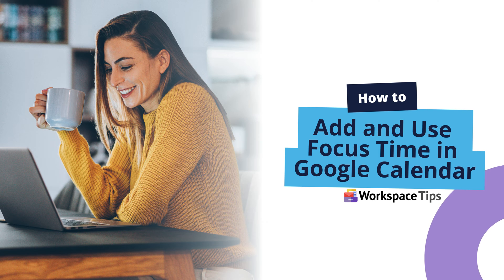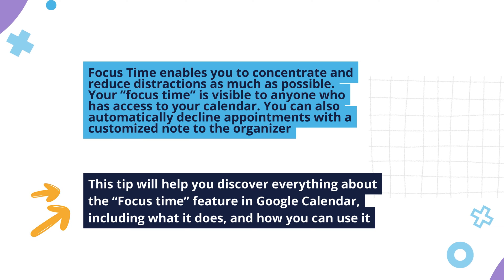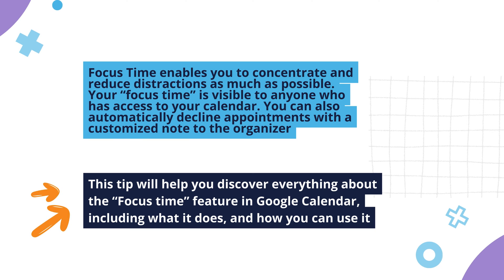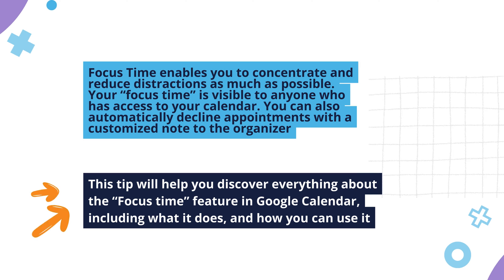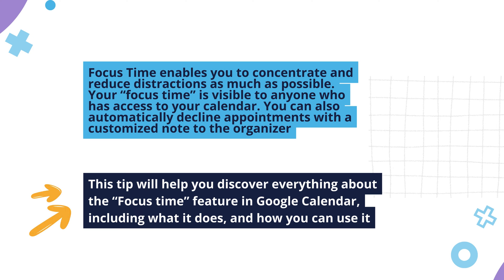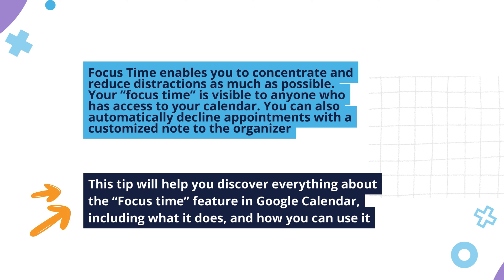Let's look at how to add and use focus time in Google Calendar. Focus time enables you to concentrate and reduce distractions as much as possible. Your focus time is visible to anyone who has access to your calendar. You can also automatically decline appointments with a customized note to the organizer. This tip will help you discover everything about the focus time feature in Google Calendar, including what it does and how you can use it.